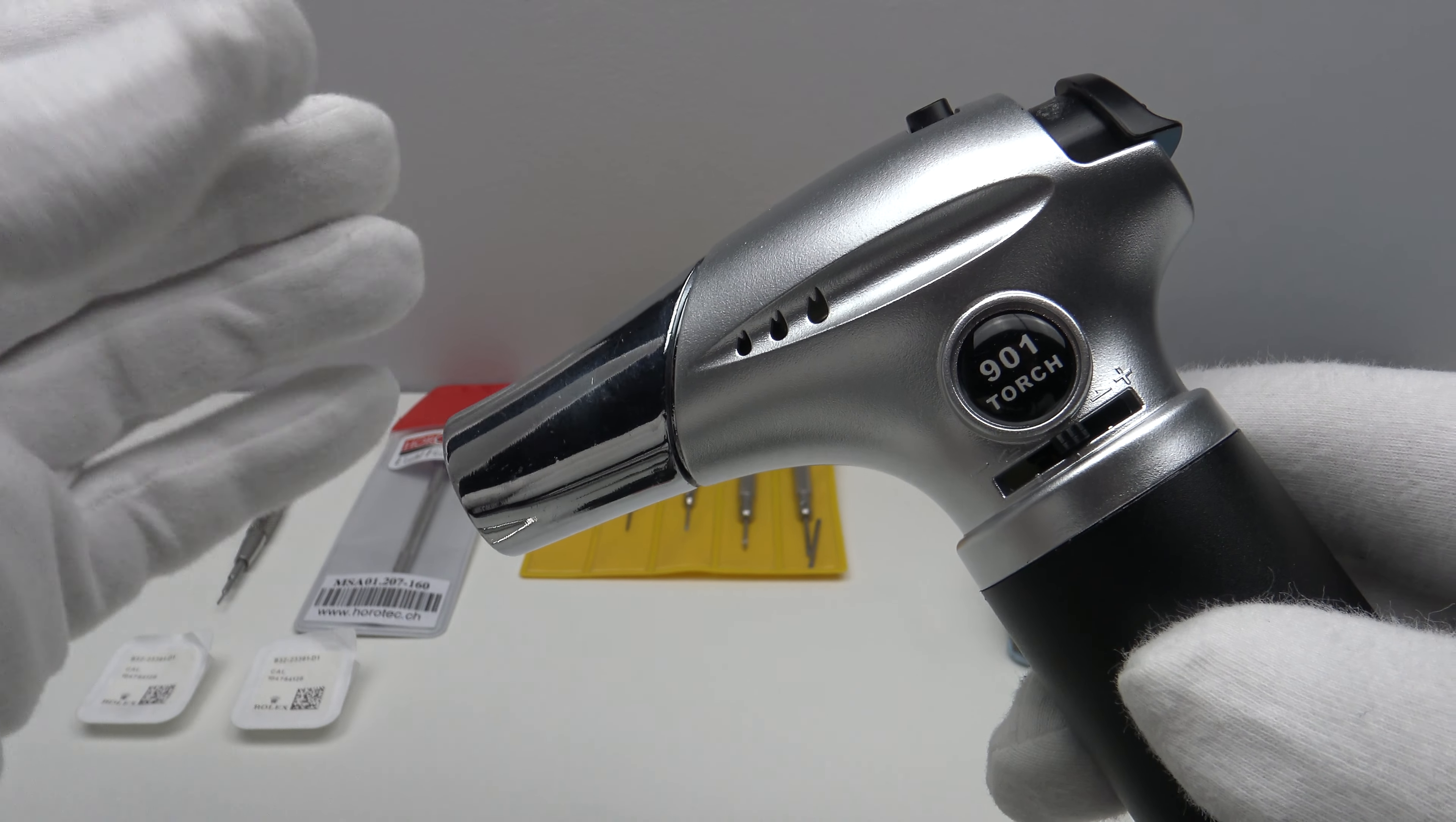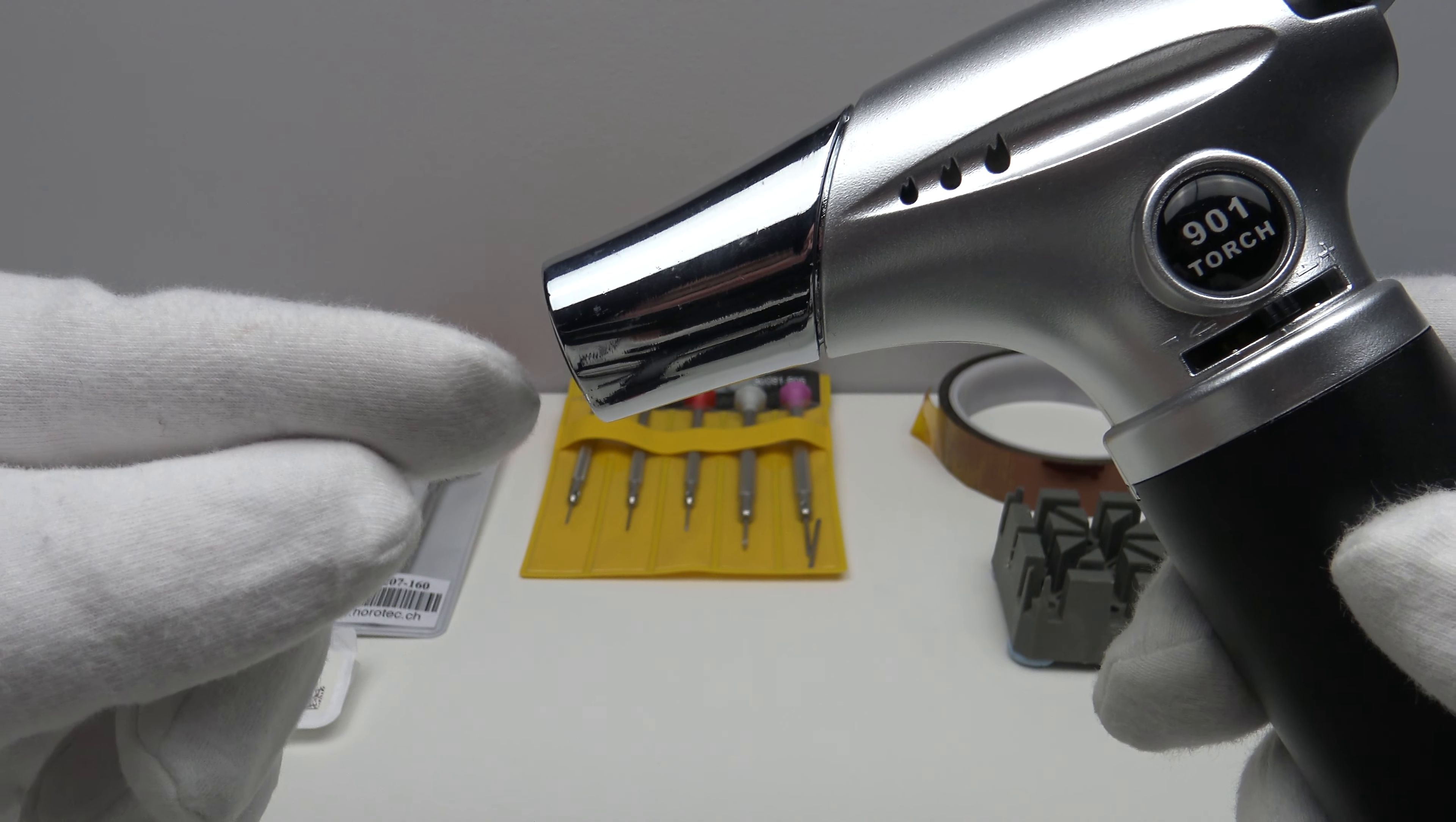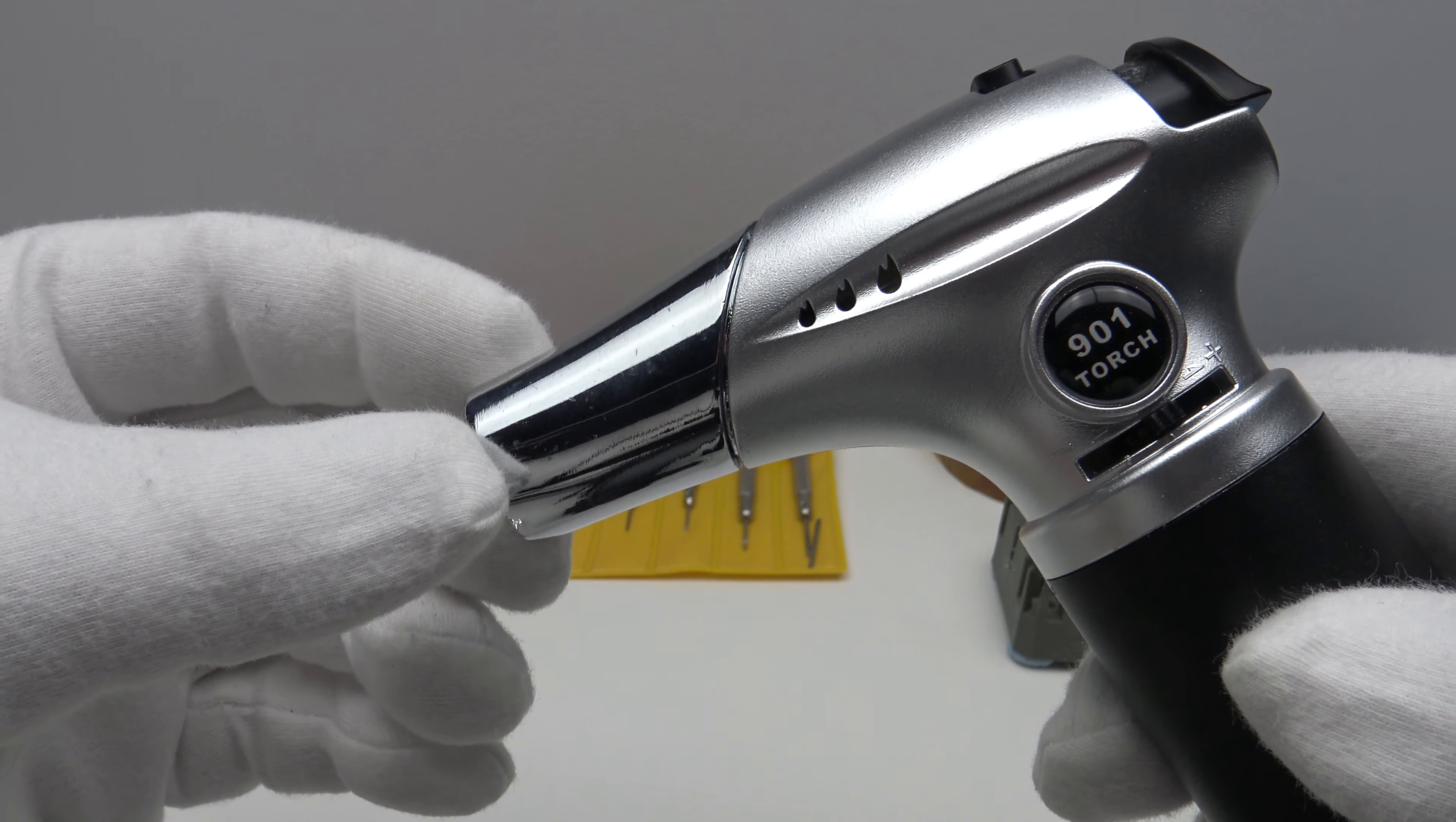Now, you'll find with 904L Oyster Steel. It conducts heat very quickly. So, 10 seconds of heat will actually heat up several of the links, even if one directs the tip of the flame onto the end of the screw. The Oyster Steel will conduct the heat rapidly and the heat will quickly spread throughout the bracelet.